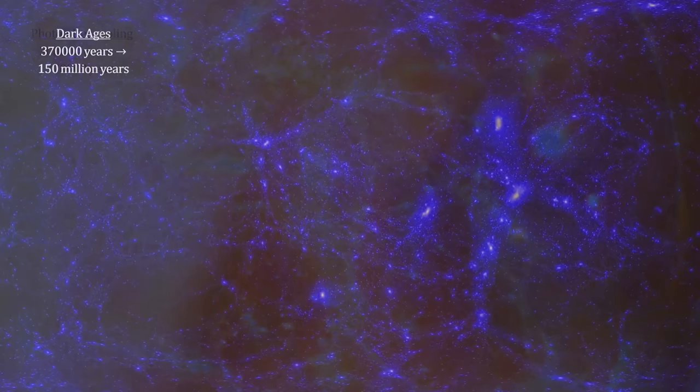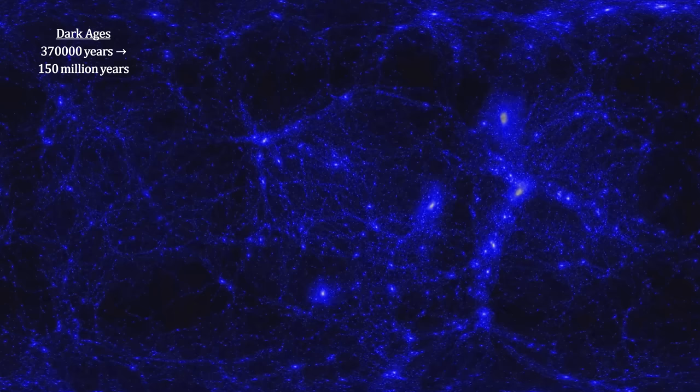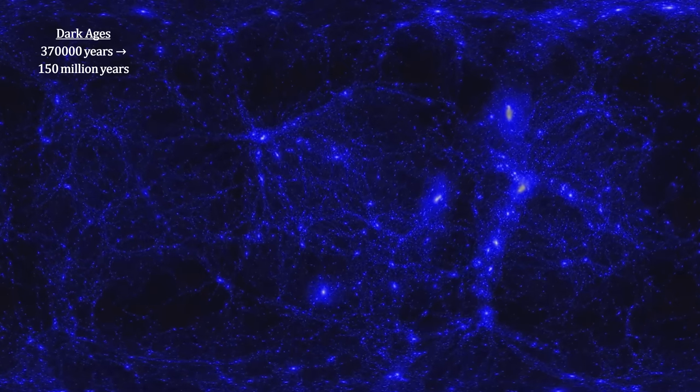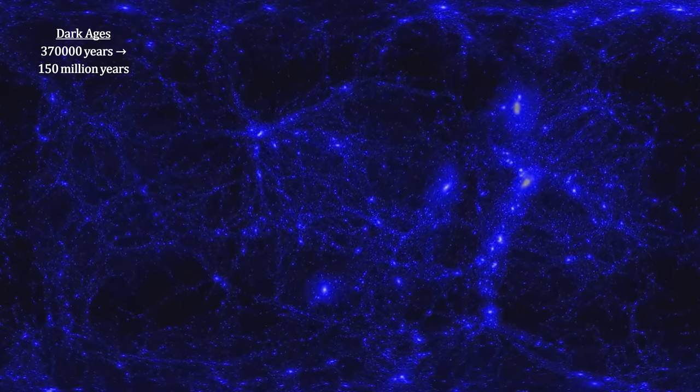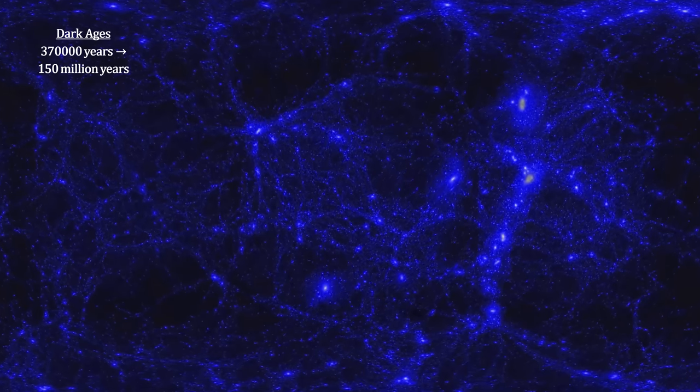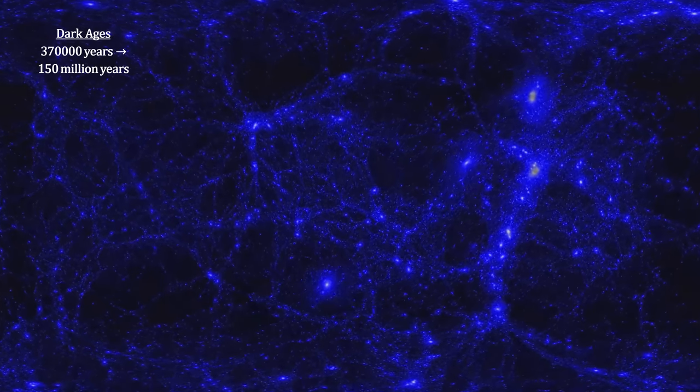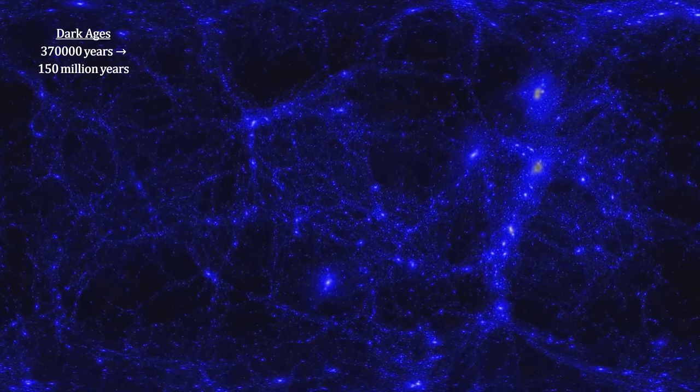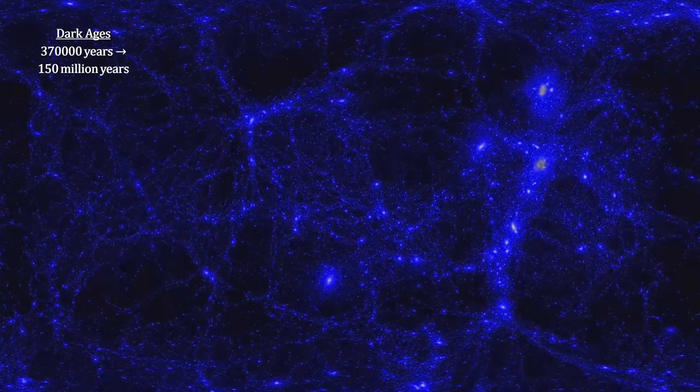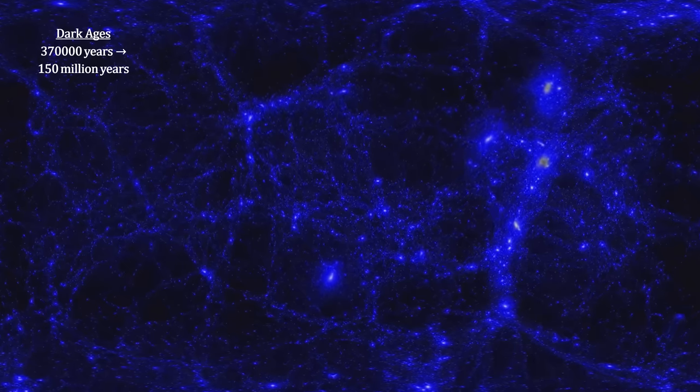During this time, the universe was filled with dark matter, hydrogen, and some helium. With no stars having formed to give off visible light, the universe was literally dark. The caustic process worked the dark matter into filaments, with the baryonic matter, hydrogen and helium, tagging along.